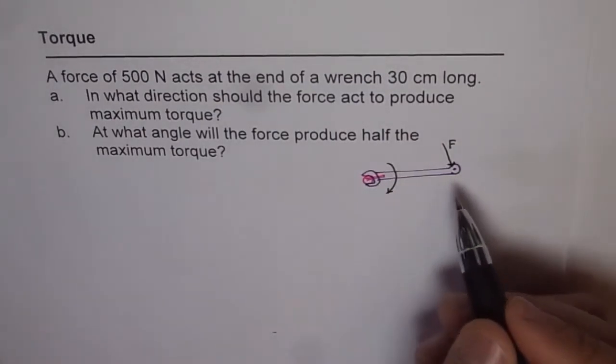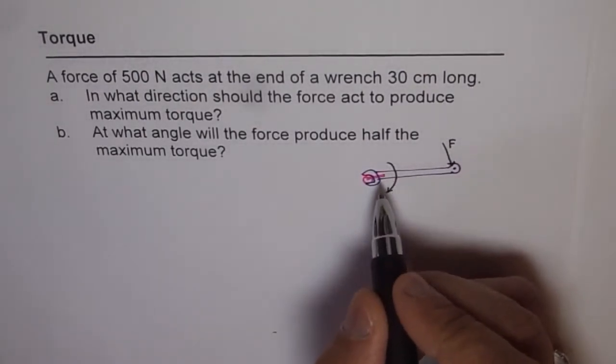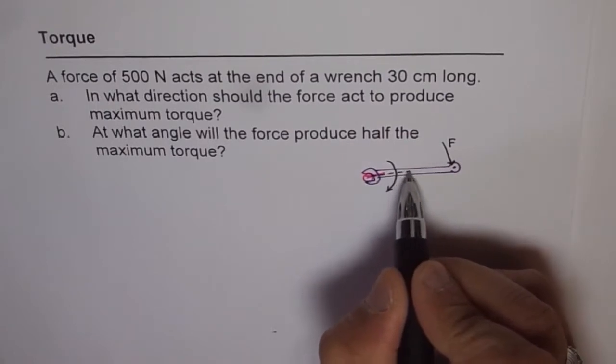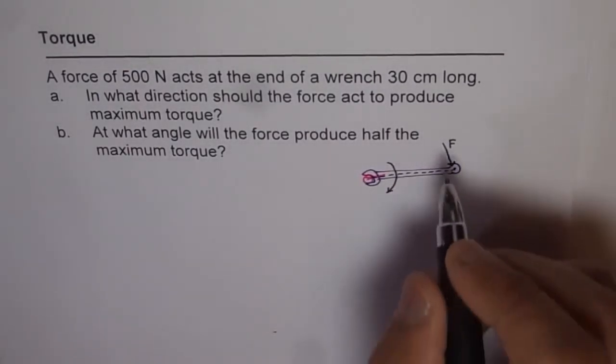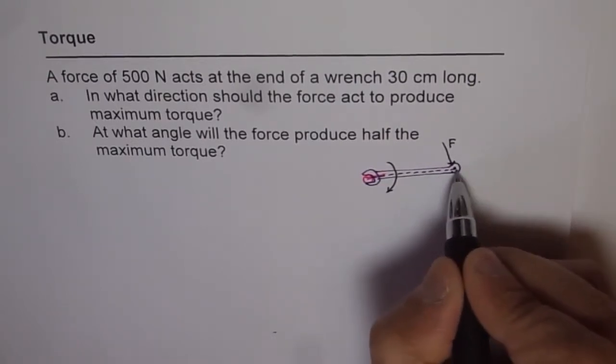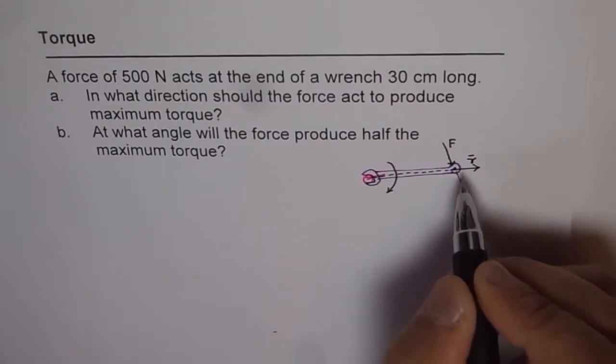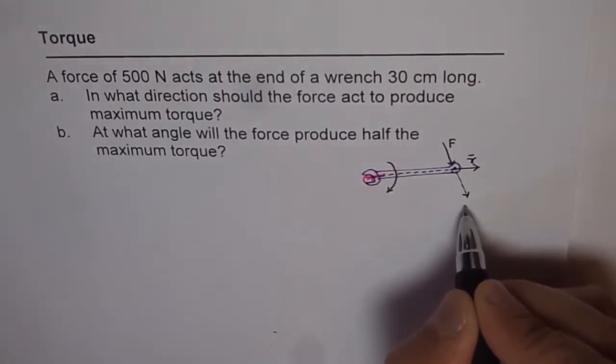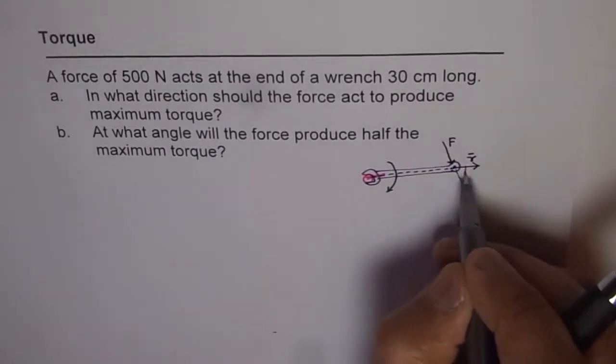Now as you can see, this is application of cross product. You are applying two vectors. One is this, which is arm, the length of this wrench. It acts as an arm length. The other one is the force itself. So this radial is in this direction, outward. We call this r. And this is force, which is a vector acting in this direction.